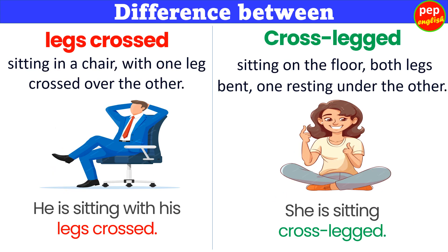Difference between legs crossed and cross-legged. Legs crossed means sitting in a chair with one leg crossed over the other. Example: He is sitting with his legs crossed. Cross-legged means sitting on the floor with both legs bent, one resting under the other. Example: She is sitting cross-legged.